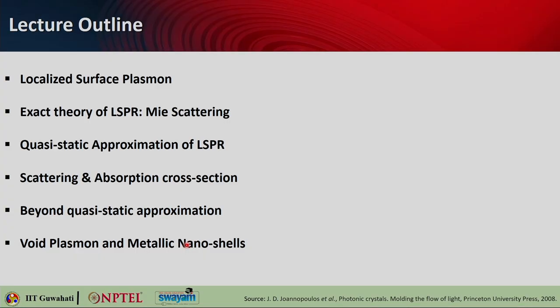Hello, students. Welcome to lecture 19 of the online course on nanophotonics, plasmonics and metamaterials. Today's lecture will be on localized surface plasmon resonance, or in short LSPR. Here is the lecture outline: we will first see what is localized surface plasmon, then derive the LSPR resonance conditions and treat it using the exact theory of LSPR, that is Mie scattering theory. We will also look into the quasi-static approximation of LSPR, calculate scattering and absorption cross sections, handle cases beyond quasi-static approximation, and towards the end see the characteristics of void plasmon and metallic nanoshells.